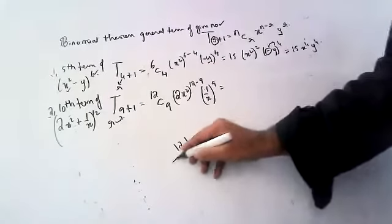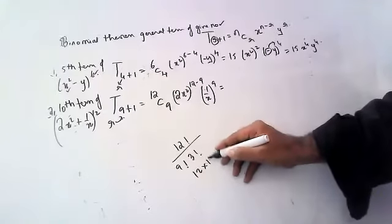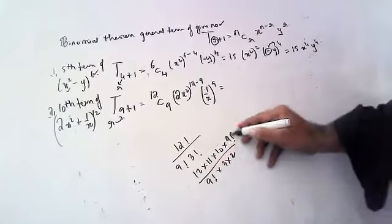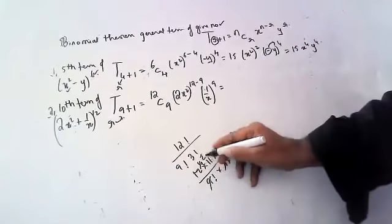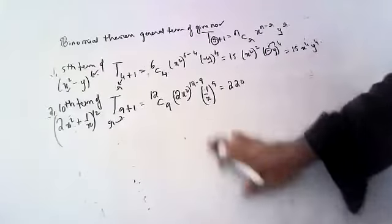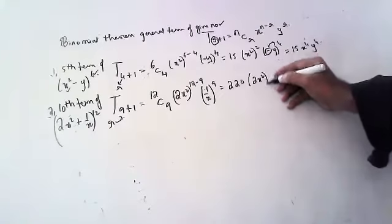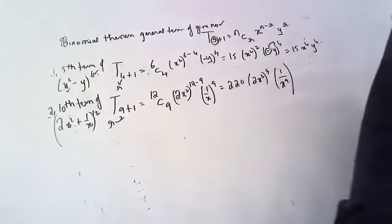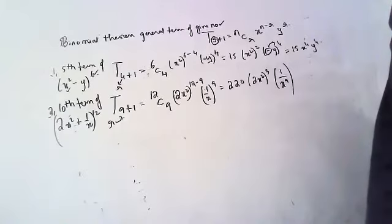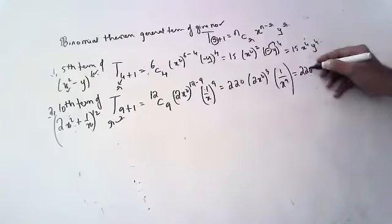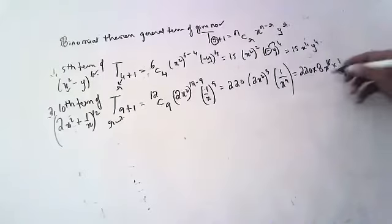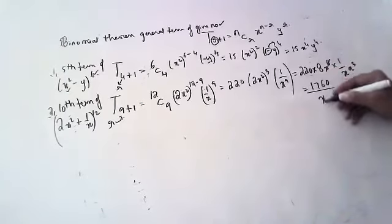12C9 = 12! / (9! · 3!) = (12 × 11 × 10 × 9!) / (9! × 3 × 2 × 1) = 220. So we get 220 · 8 · x⁶ · (1/x⁹) = 220 · 8 · x⁶ / x⁹ = 1760 / x³. That is the answer.